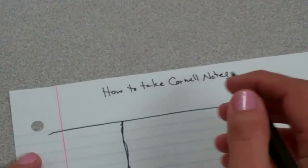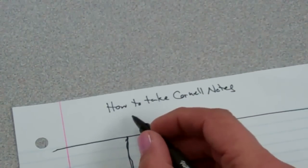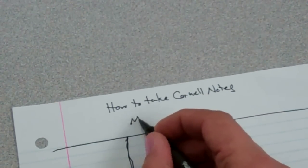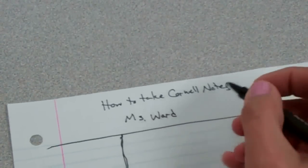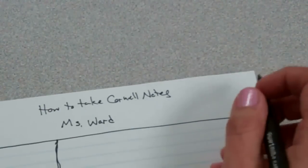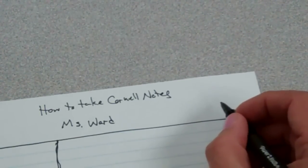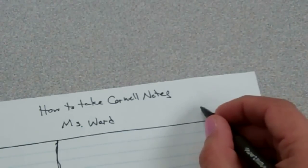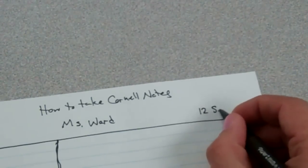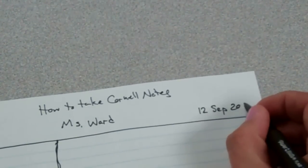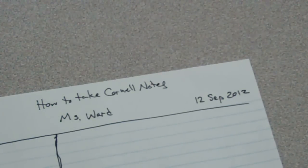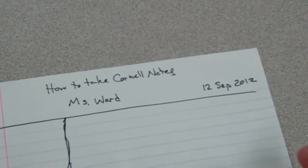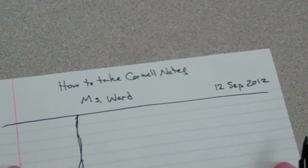Now, you're going to add the source of the notes. And you're going to give the date that you're taking the notes. In this case, you're taking the notes on the 12th of September in 2010, I'm sorry, 2012. If you're taking these notes on a different day, please give the date that you're actually taking the notes.